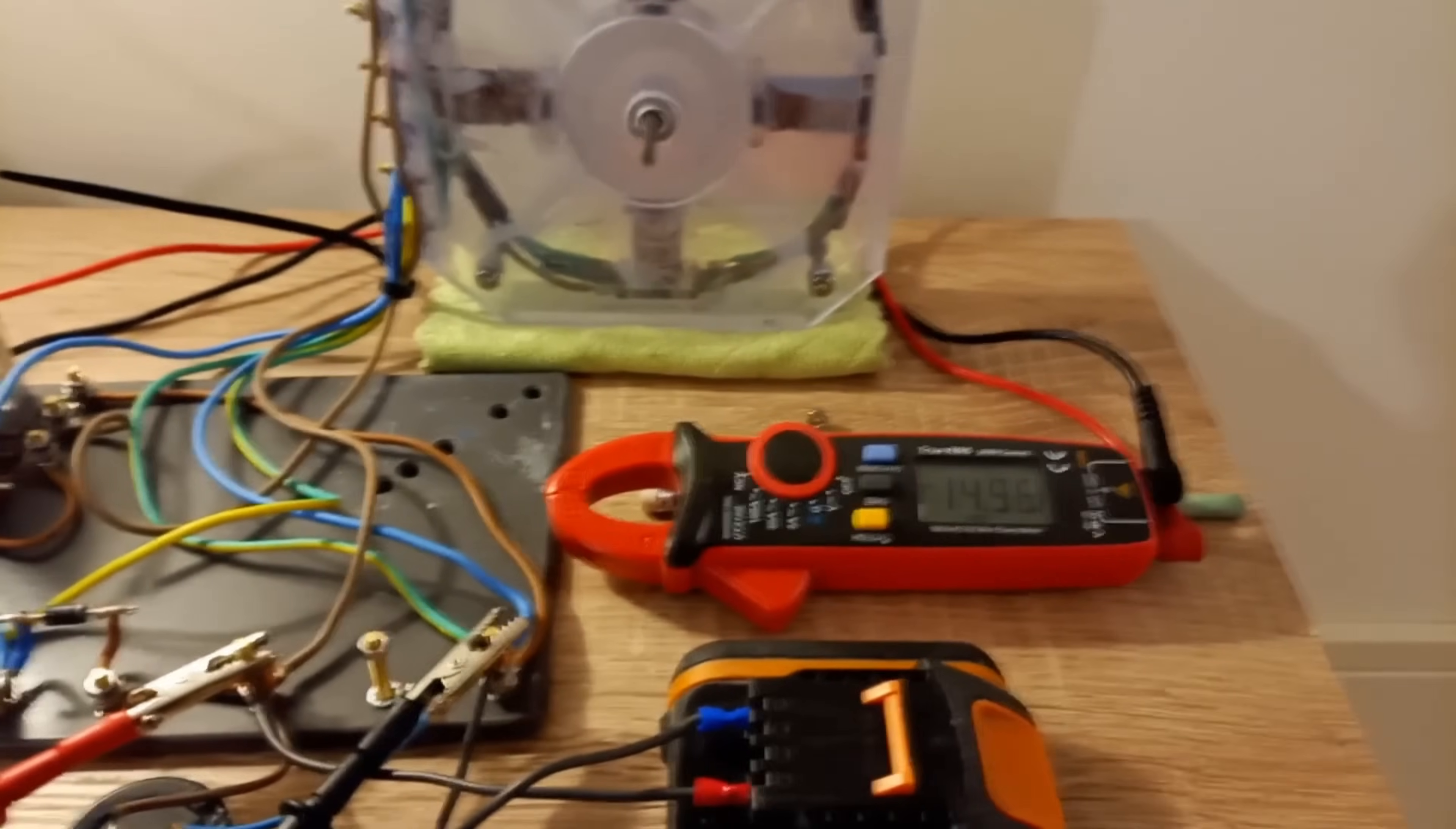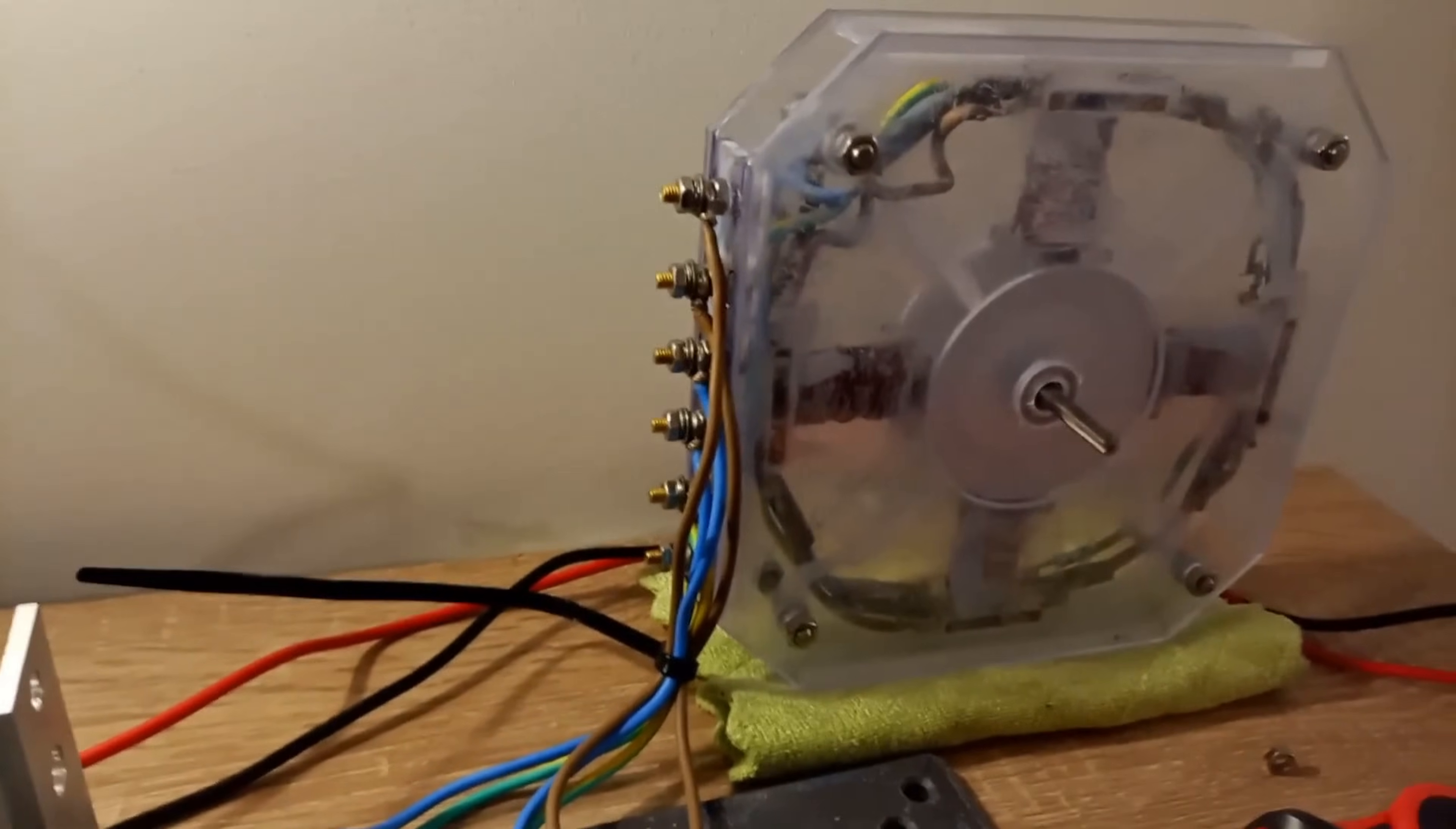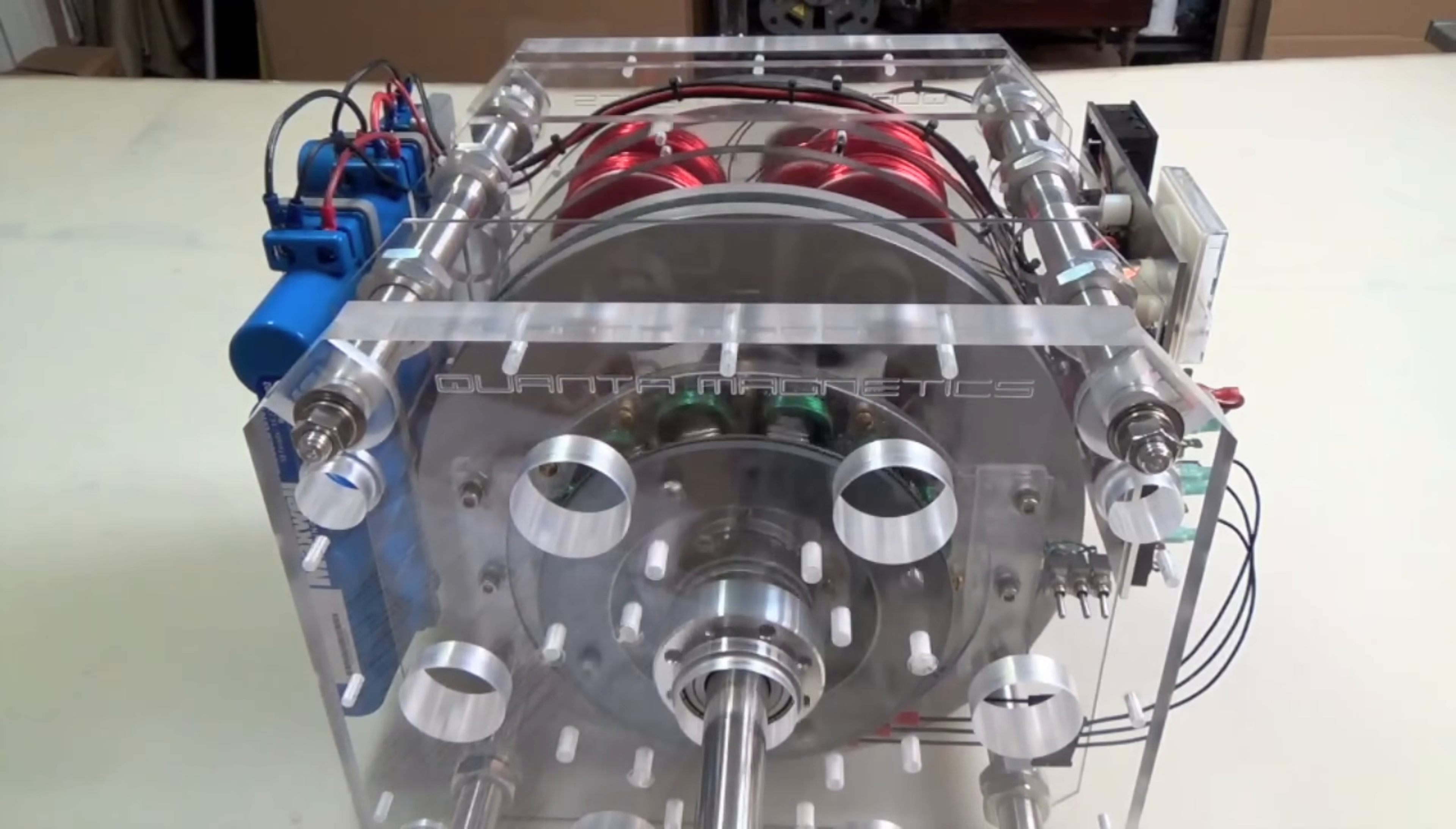It was during a chance encounter with a malfunctioning generator that Cromry had his eureka moment. Observing the powerful magnetic fields at play, he realized that he could harness this natural force to generate electricity without the need for traditional fuels. From that day forward, Cromry's singular focus was to bring his revolutionary idea to life.